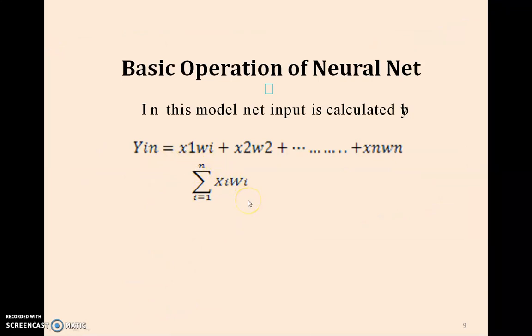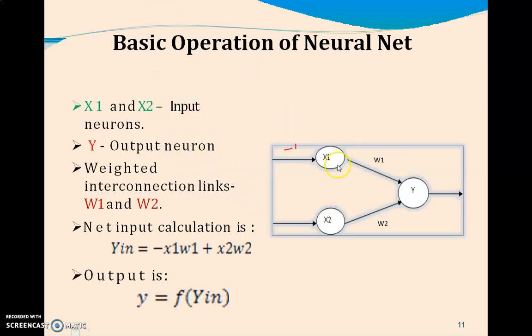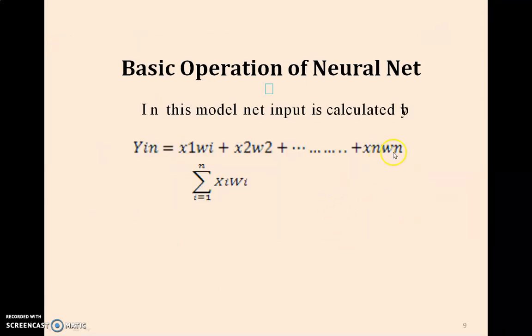Suppose there are many input nodes connected to the Y node, then I have to sum all inputs: x1 w1 plus x2 w2 and so on, xn wn. That entire input is called Yin. I can write this as the summation from i equals 1 to n of xi times wi.